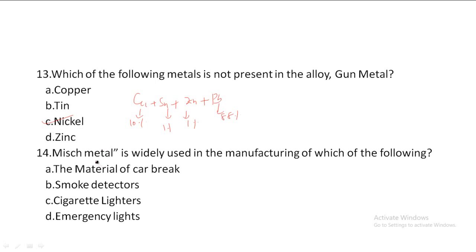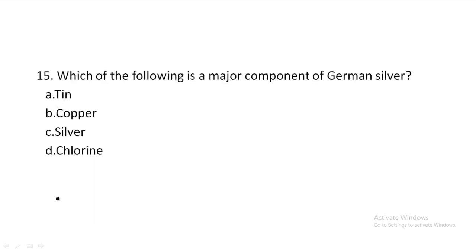Next one: Misch metal is widely used in the manufacturing of which of the following? Option A: material of the car brake, smoke detectors, cigarette lighters, emergency lighters. Option C is the correct answer — cigarette lighters and emergency lighters.